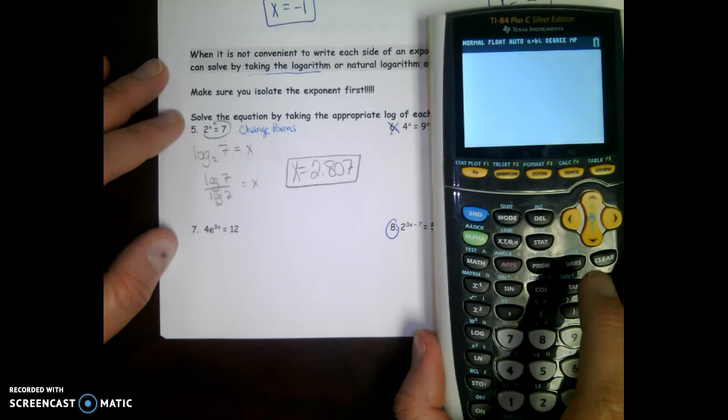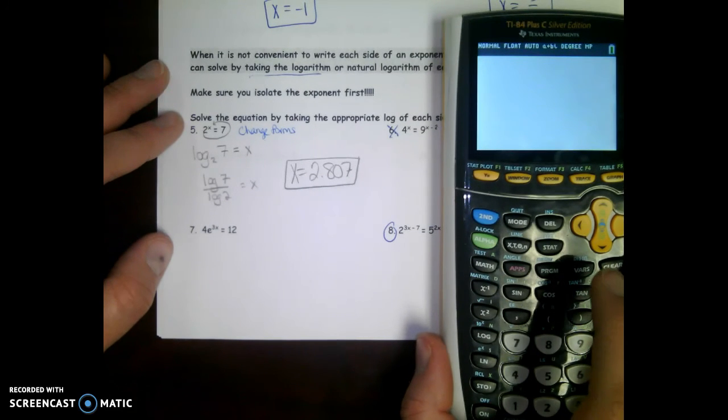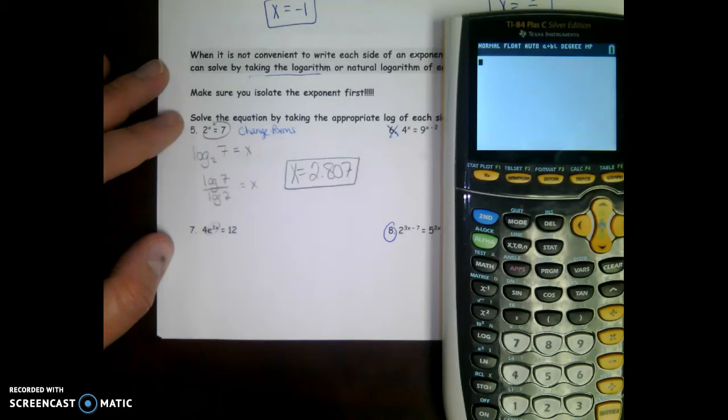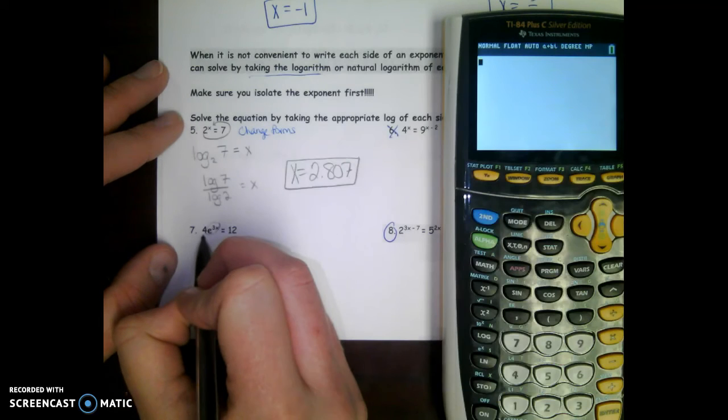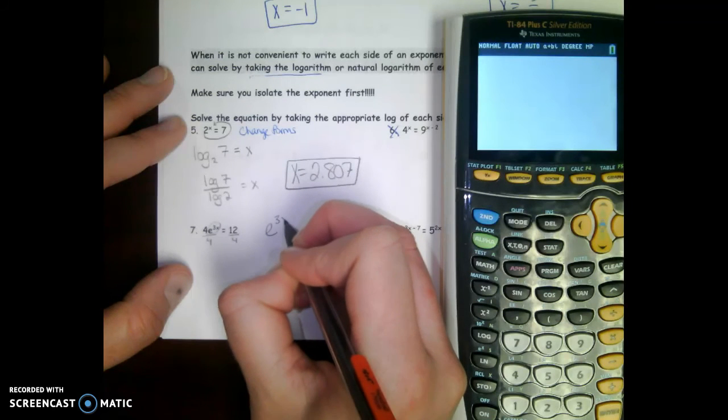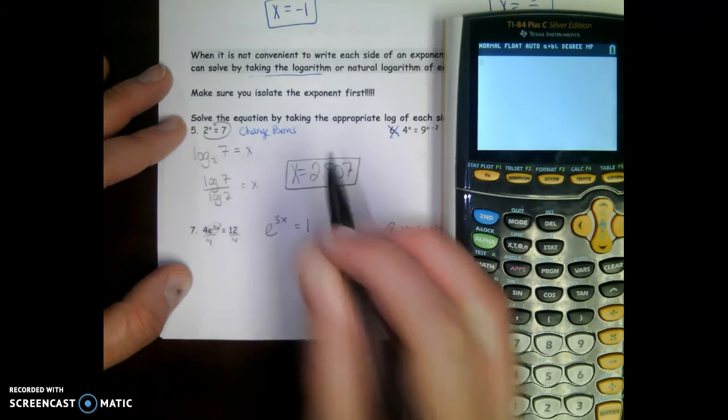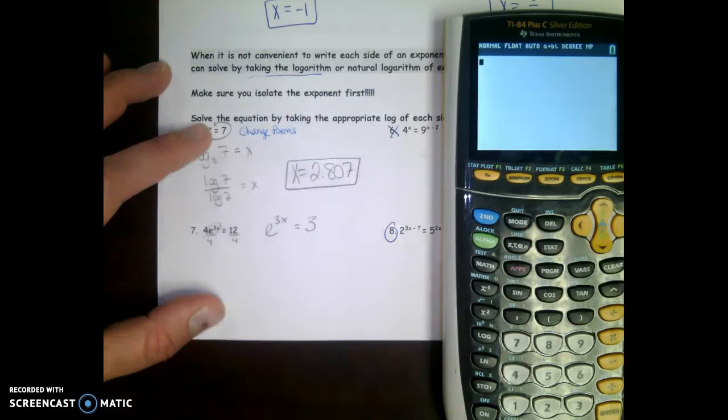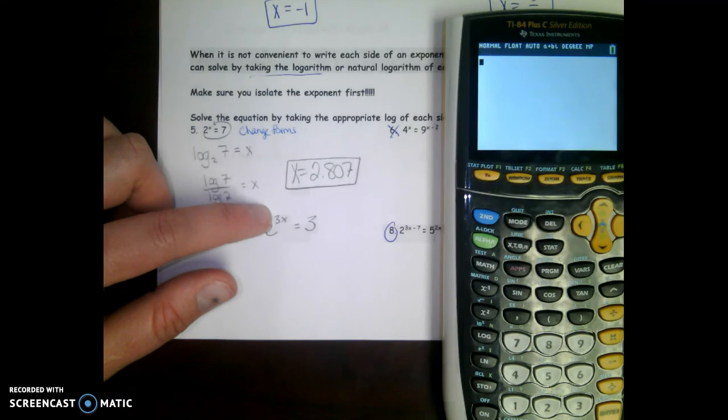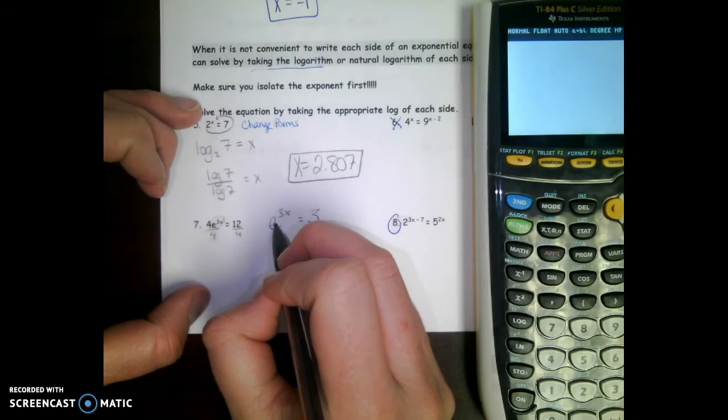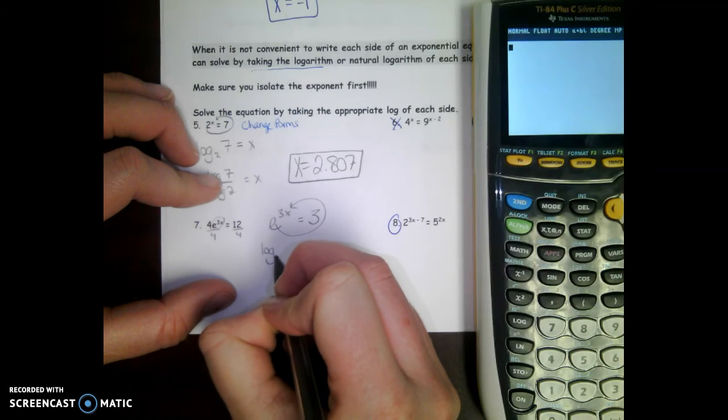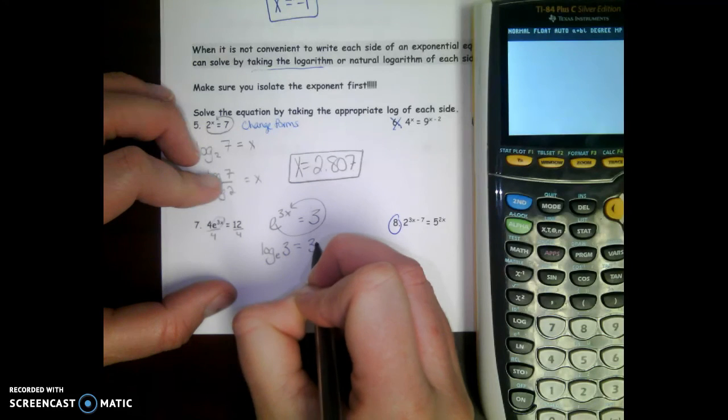Number 7. What do you think we need to do first? We need to get this thing by itself before we change forms. How do we get rid of that 4? Divide both sides by 4. So we would have e to the 3x equals, what is 12 divided by 4? 3. And now we're stuck with x in our exponent. Anytime you're stuck, change forms. Log base e of 3 equals 3x.